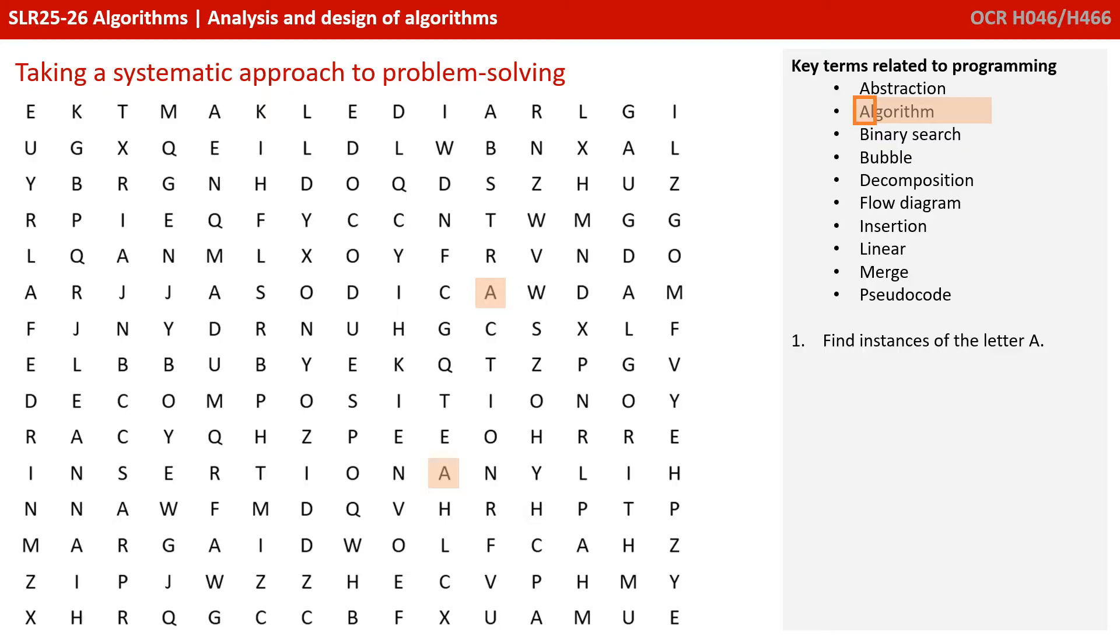So what we could do is take an algorithmic thinking approach and look for the first letter of the word algorithm. And once more, we could just look randomly around the grid for letter A. So an example can be seen in these two places on the screen.